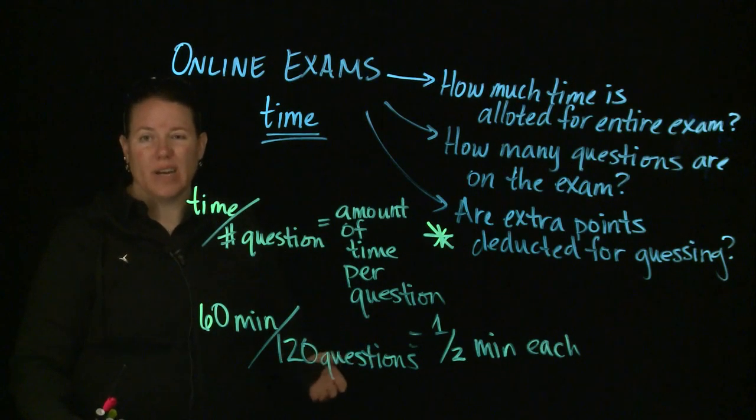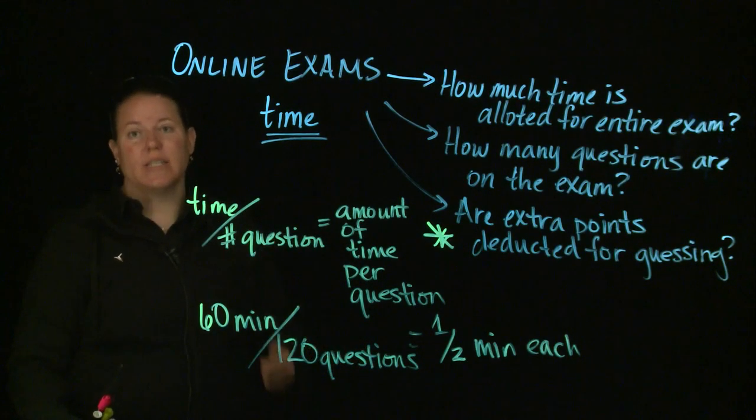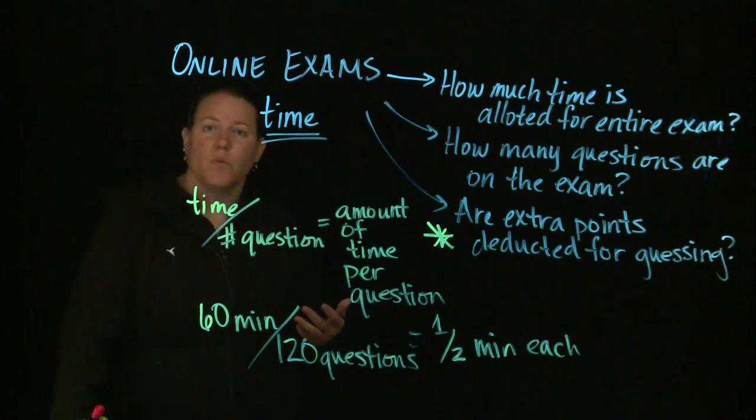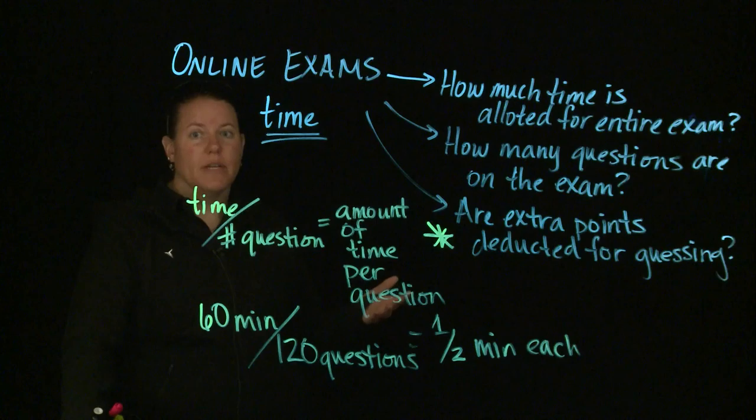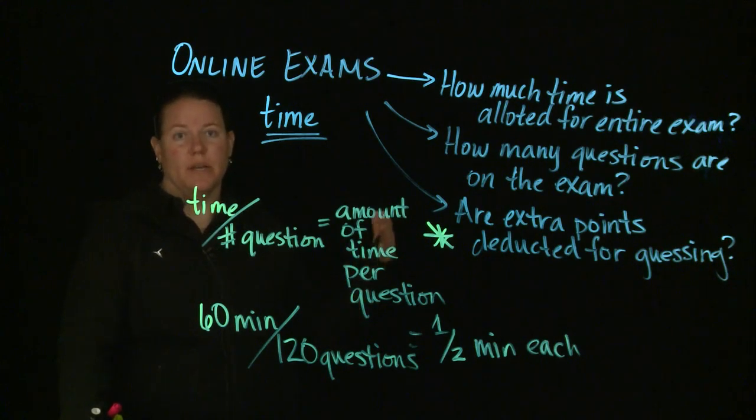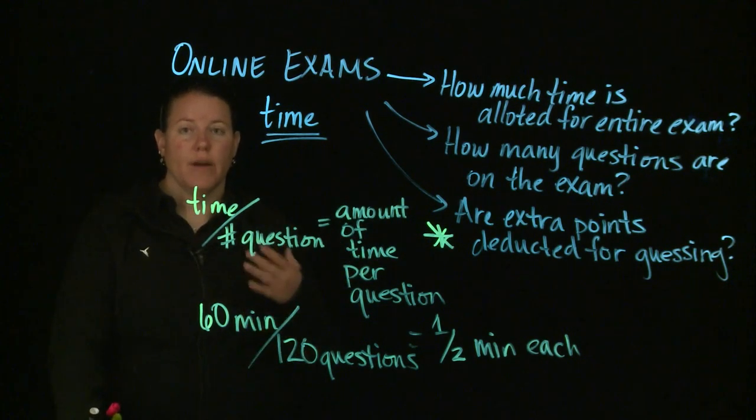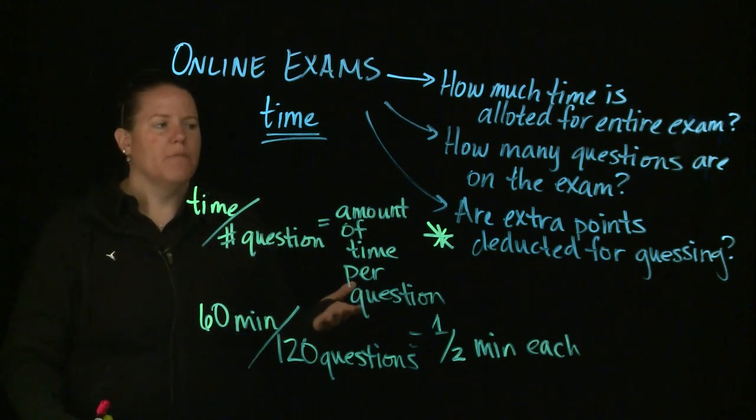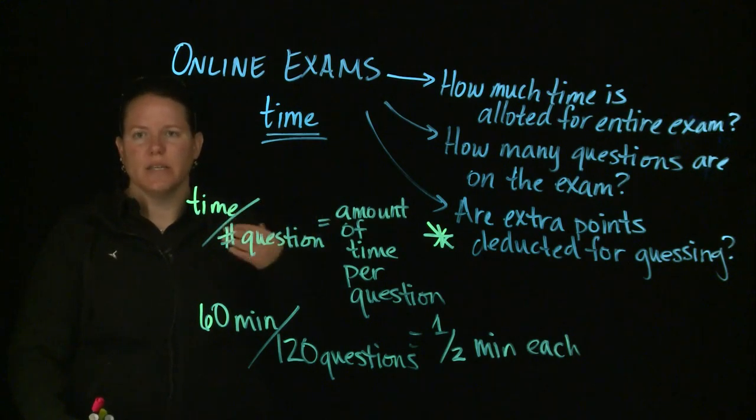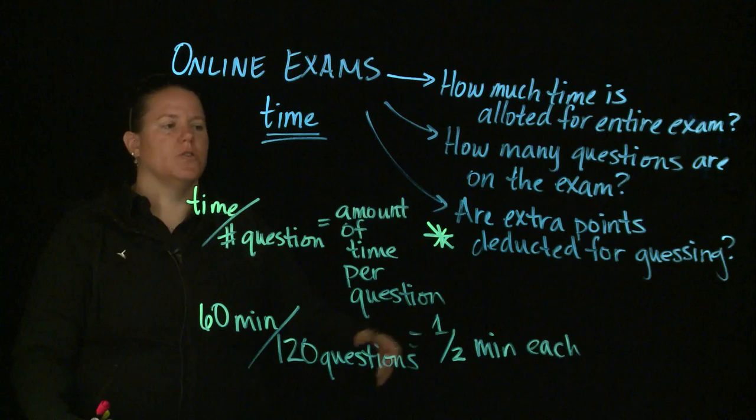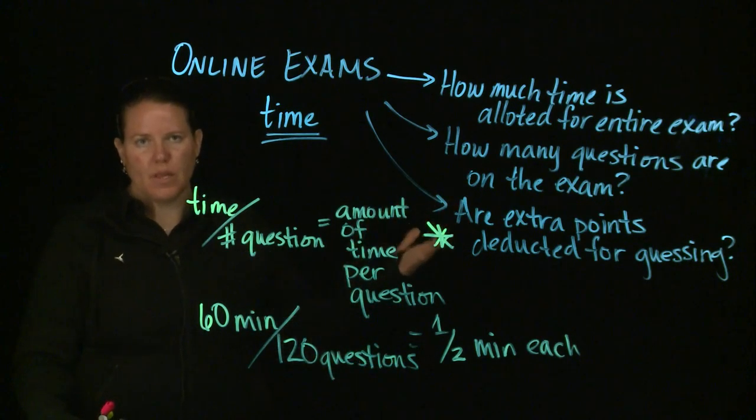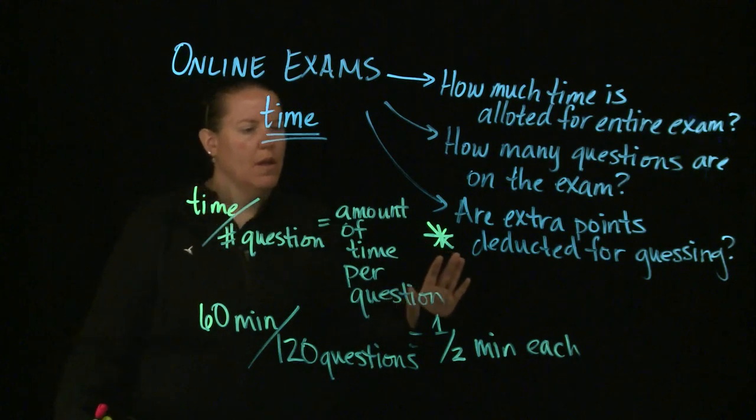Then the way you do this is different, depending on whether those extra points are deducted for guessing. If you have extra points deducted for guessing, then you need to skip all of those. You need to basically leave them blank, that's what skip does. And it'll say at the end of the exam, are you sure you want to leave these blank? And you will say yes if extra points are deducted for guessing. And the reason why is the amount of points that you would be deducted for guessing those questions, for getting them wrong, is going to be much larger than the amount of points you would have gotten from guessing them correctly. That's the point.